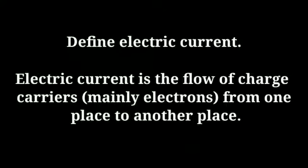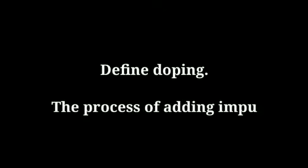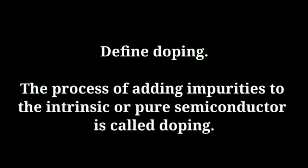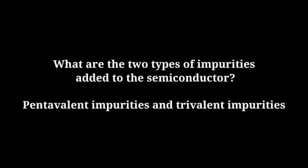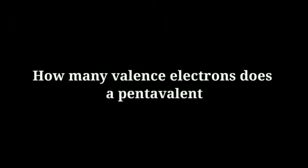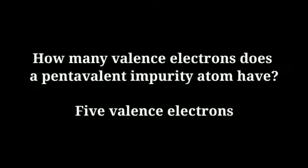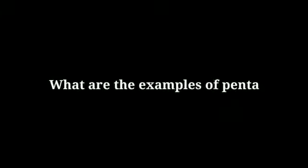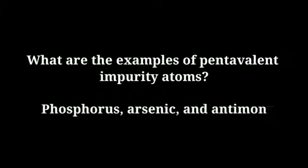Define doping: the process of adding impurities to the intrinsic or pure semiconductor is called doping. What are the two types of impurities added to the semiconductor? Pentavalent impurities and trivalent impurities. How many valence electrons does a pentavalent impurity atom have? Five valence electrons.